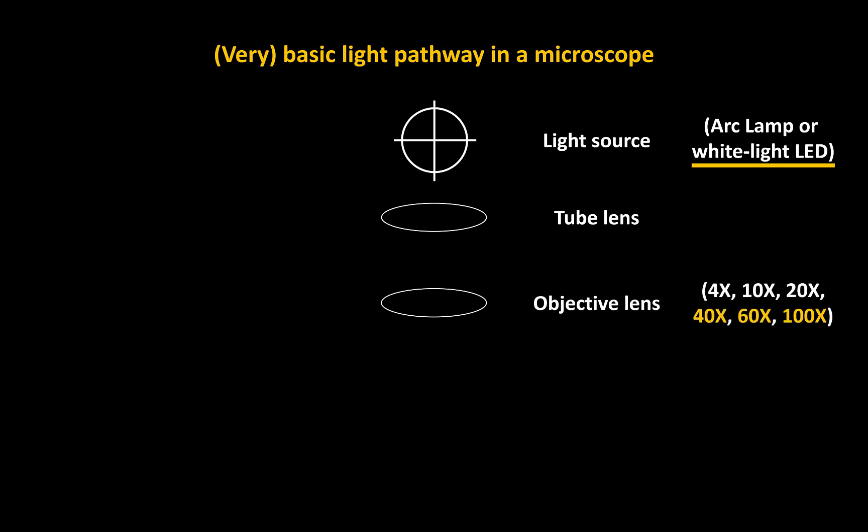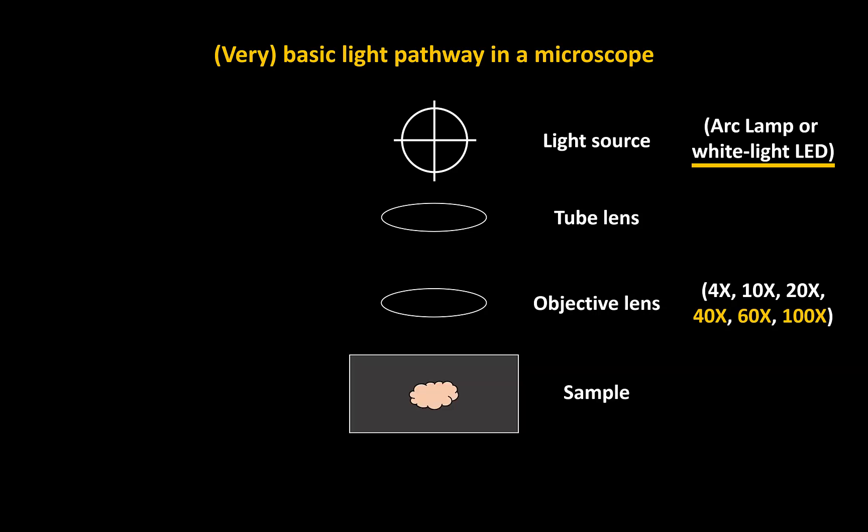There's a 4x, a 10x, and a 20x, all of which are air-based objectives. And then we have a 40x, a 60x, and a 100x as well. The 40 through 100x are all oil-based objectives. The light source goes through these lenses and eventually is able to excite our sample.